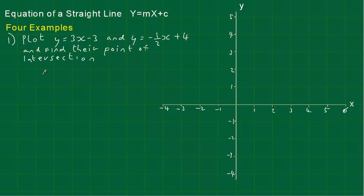Let's plot a few straight lines and do a few examples. Plot y equals 3x minus 3 and y equals minus a half x plus 4, and find their point of intersection. I'll call that point P, the point of intersection, and we'll put it in when we find it.